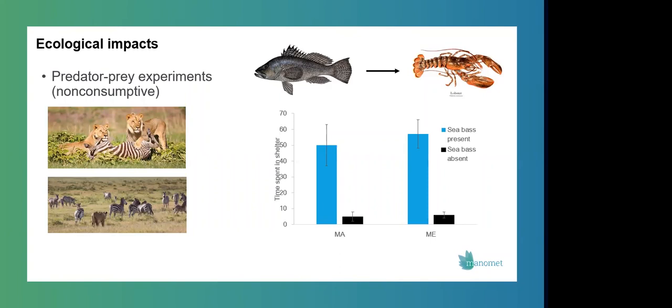And these were lobsters from Massachusetts, which is the group on the left, and from Maine, which is the group on the right. So when sea bass are present, and it was really just the cue that the lobsters were given. So they were just given a scent cue of sea bass in the water, they couldn't actually see them. So when that cue of sea bass is present, the lobsters essentially run and hide. They spend more time in shelter, they forage less, and they eat less, which has potentially huge implications for growth and reproduction of the lobster population.